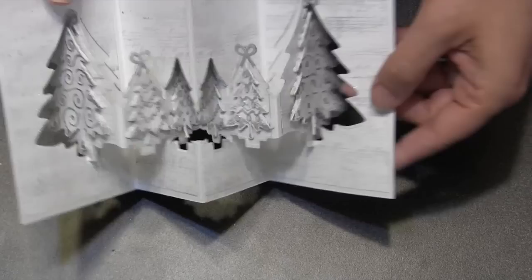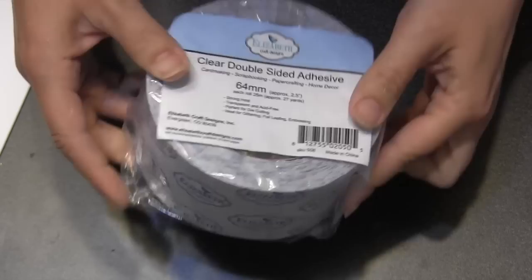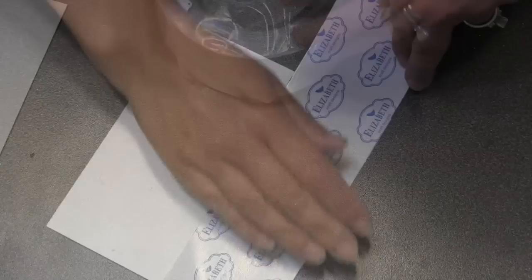You know, once all my trees are glued in place, this card really doesn't need much more. It's quite pretty with just that subtle background and those striking trees. And now all I'm going to do is add a greeting. Now if you haven't had a chance yet to try the new Elizabeth Craft Designs clear double-sided adhesive, you are going to fall in love. It has been re-engineered to have a much thinner backing sheet so it will die cut just beautifully.